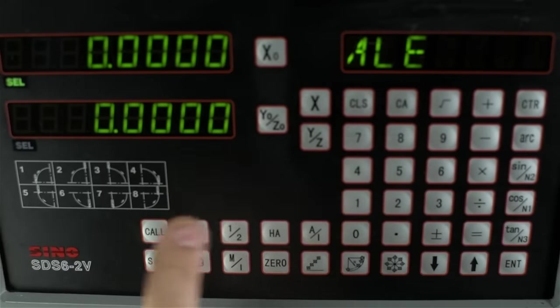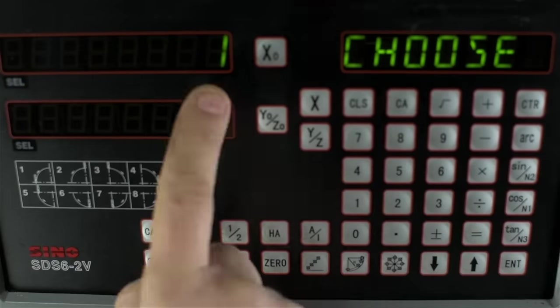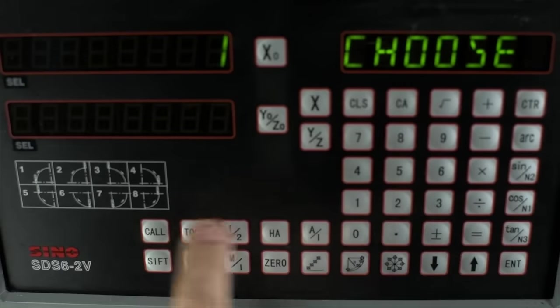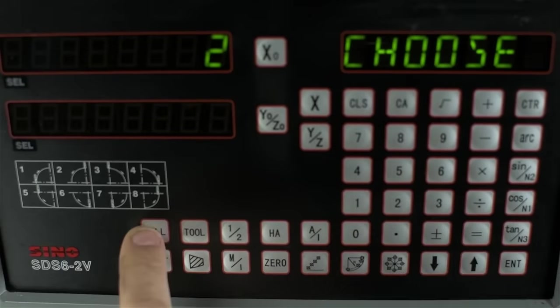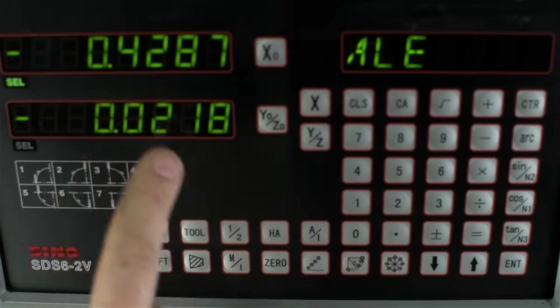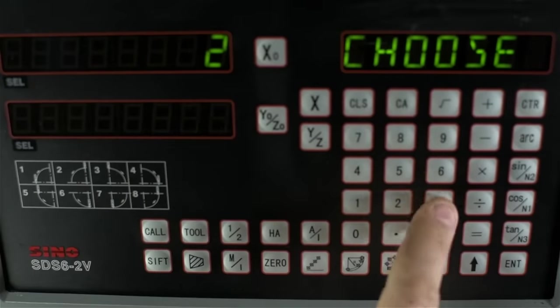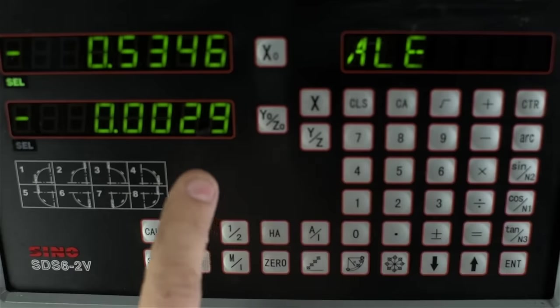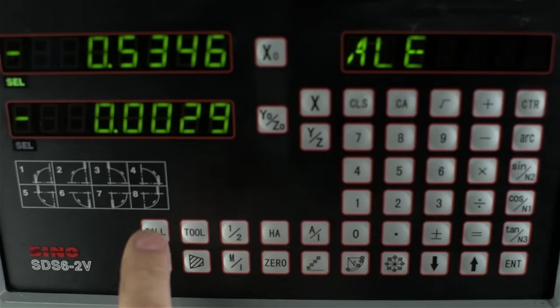From absolute, I can now call up tools. So I can call tool 1, hit enter, and that's 0. If I call tool 2, hit enter, that's the difference in position between tool 1 and tool 2. If I call tool 3, that is the position of tool 3 with respect to tool 1. So let's see if I can try this out. We'll go call up tool 1 again.